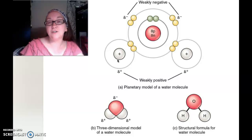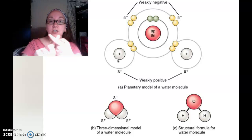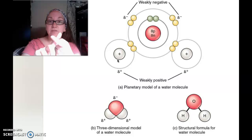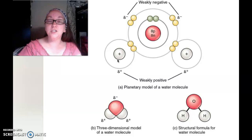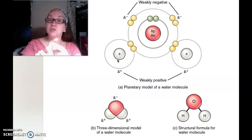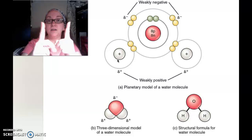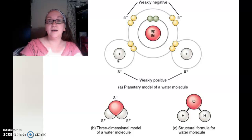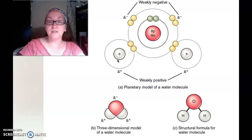We use these hydrogen bonds in DNA. They help hold the two strands of DNA together in the double helix, but we have to unwind it to do things like replication, mitosis, and meiosis. Those have to be just weak interactions, and hydrogen bonds can be broken apart to separate the strands in those different DNA processes.